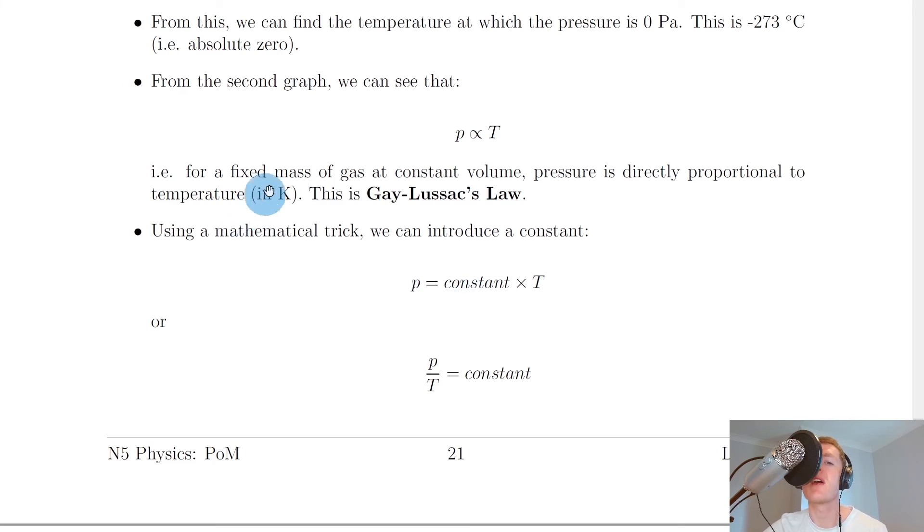But to conclude we can say that for a fixed mass of gas at constant volume pressure is directly proportional to temperature when it's in Kelvin not in degrees Celsius. And this is called Gay-Lussac's law i.e. the pressure temperature law. So remember all this means is that as temperature goes up pressure goes up or as temperature goes down pressure goes down as well. But this only works when temperature is in Kelvin.